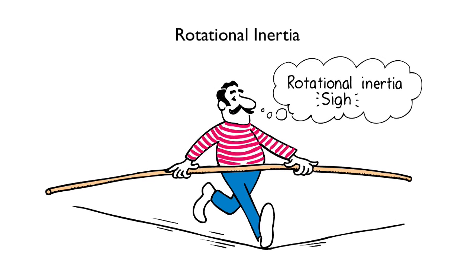Why does a tightrope walker want a long pole to help his balance? Answer: he wants more rotational inertia, that is, more resistance to falling sideways.